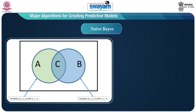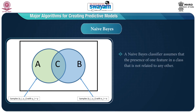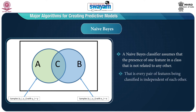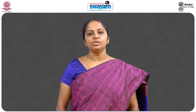The next one is the Naive Bayes algorithm — this classifier assumes the presence of one feature in a class is not related to any other, meaning every pair of features being classified is independent of each other.